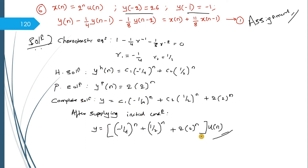The complete solution is the sum of homogeneous and particular solutions. After applying initial conditions, you get the final answer. One important thing to remember: when the input is u(n), y(n) exists only for n ≥ 0. For n < 0, y(n) is zero. So you cannot directly substitute y(-2) or y(-1). Instead, refer to the method from the previous session — substitute y(0) in the general form and the given equation, compare both, and solve for constants C1 and C2.